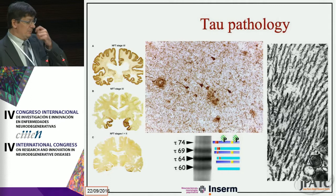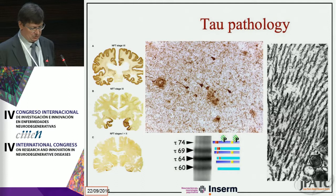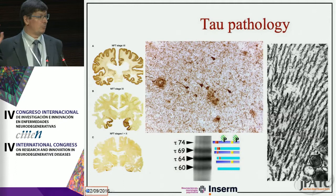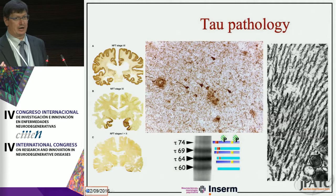As many people told you yesterday, we have tau aggregation in Alzheimer's disease. You can see here that there are six tau isoforms in the human brain, and these six tau isoforms aggregate into filaments to form neurofibrillary degeneration. This neurofibrillary degeneration starts in the hippocampal formation, then goes to the temporal lobe, then to polymodal association areas, unimodal association areas, and finally the full cerebral cortex develops tau pathology.